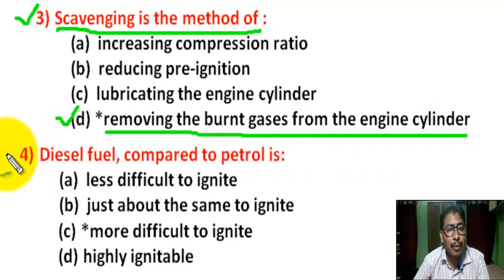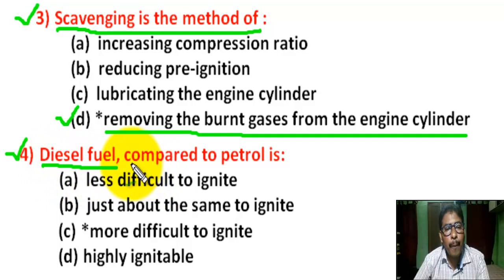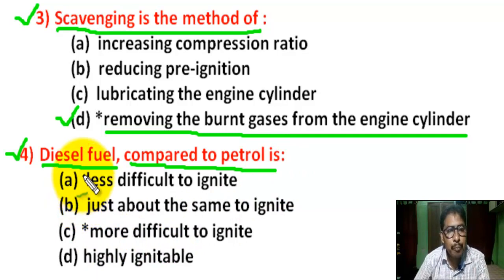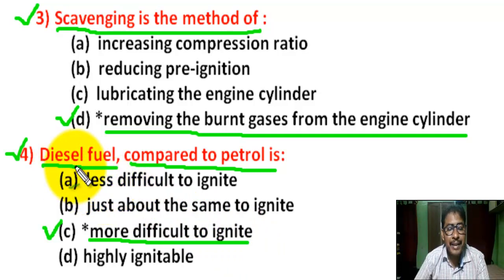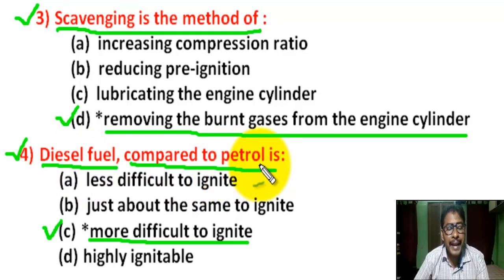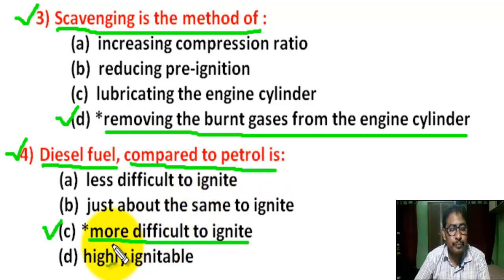Question number 4: Diesel fuel compared to petrol — there are four options. Correct answer is C — more difficult to ignite. The flash point of diesel is high compared to petrol, hence it is more difficult to ignite.